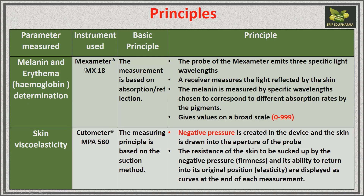For melanin and erythema (hemoglobin) determination, the instrument is the mexameter. The basic principle is absorption and reflection. The probe emits three specific light wavelengths, and a receiver measures the light reflected by the skin. Melanin is measured by specific wavelengths chosen to correspond to different absorption rates by the pigments. Values range from 0 to 999.